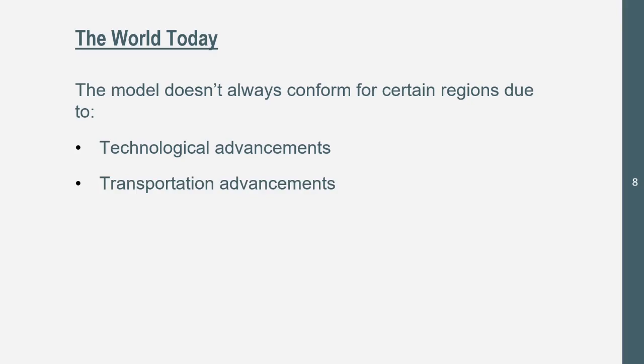Transportation advancements mean it can be quicker for some livestock to get to the market than perishable items in certain regions. We might see different arrangements of long-term versus short-term products in different regions. It depends from region to region.